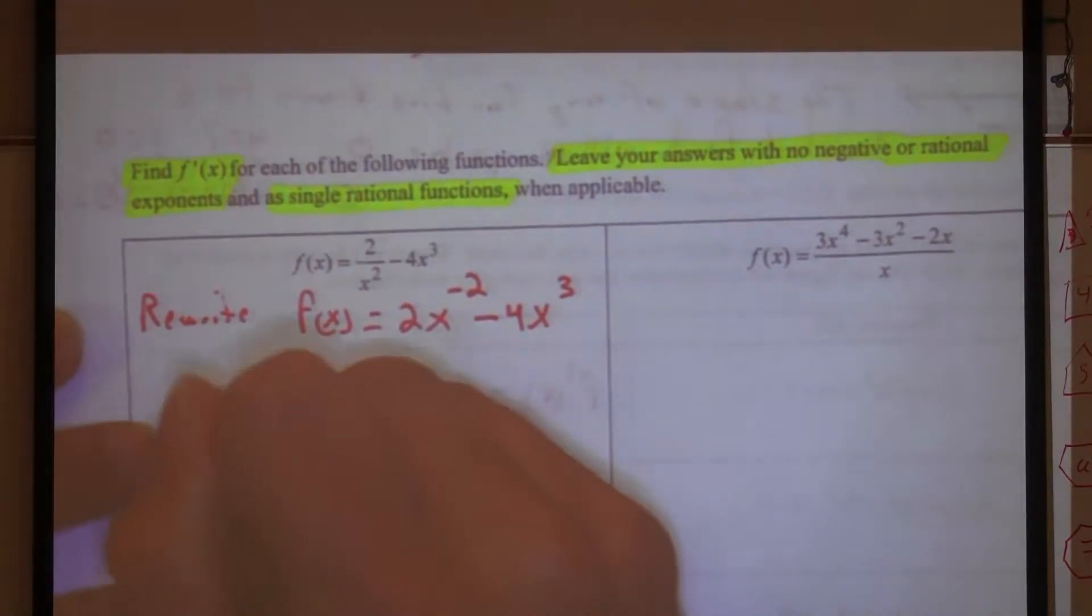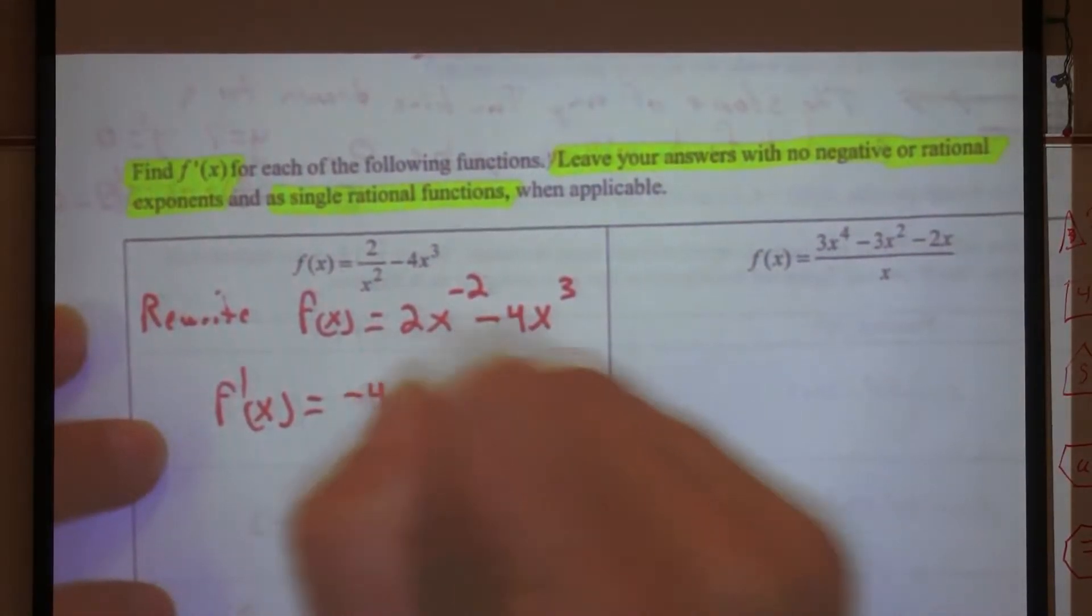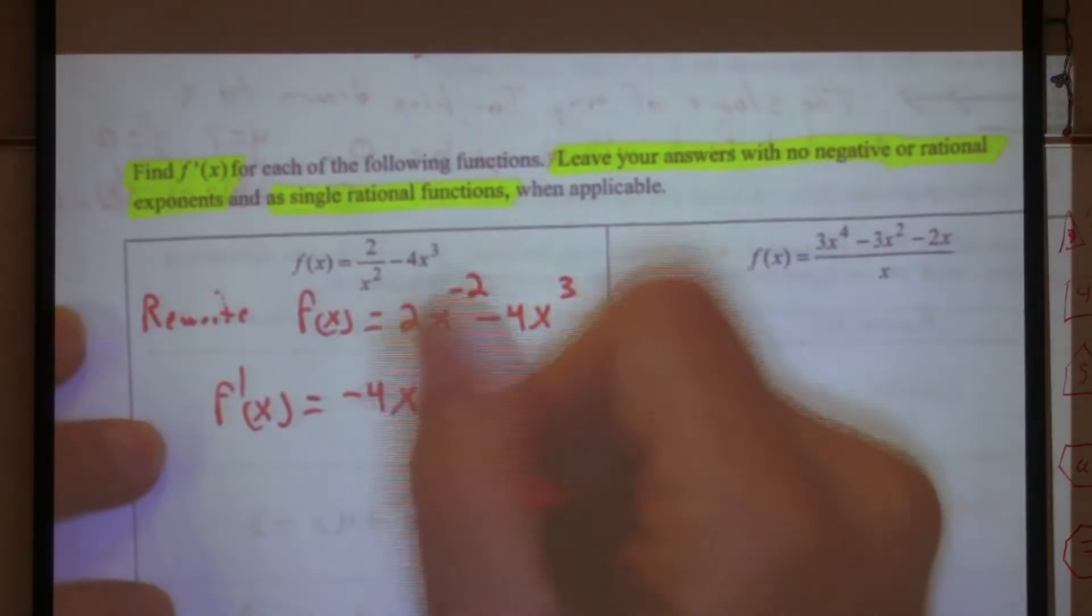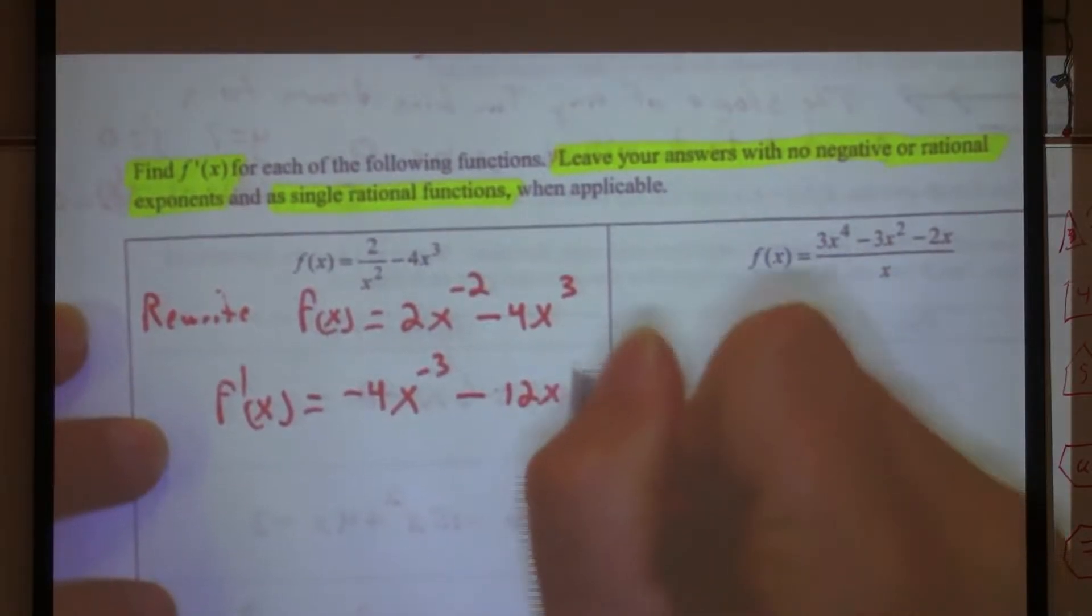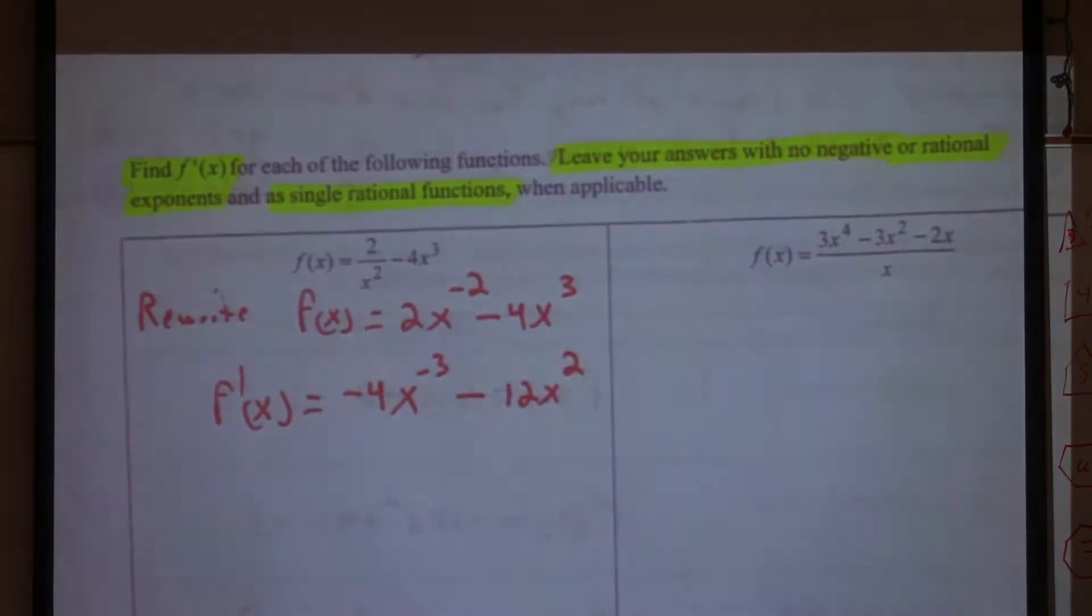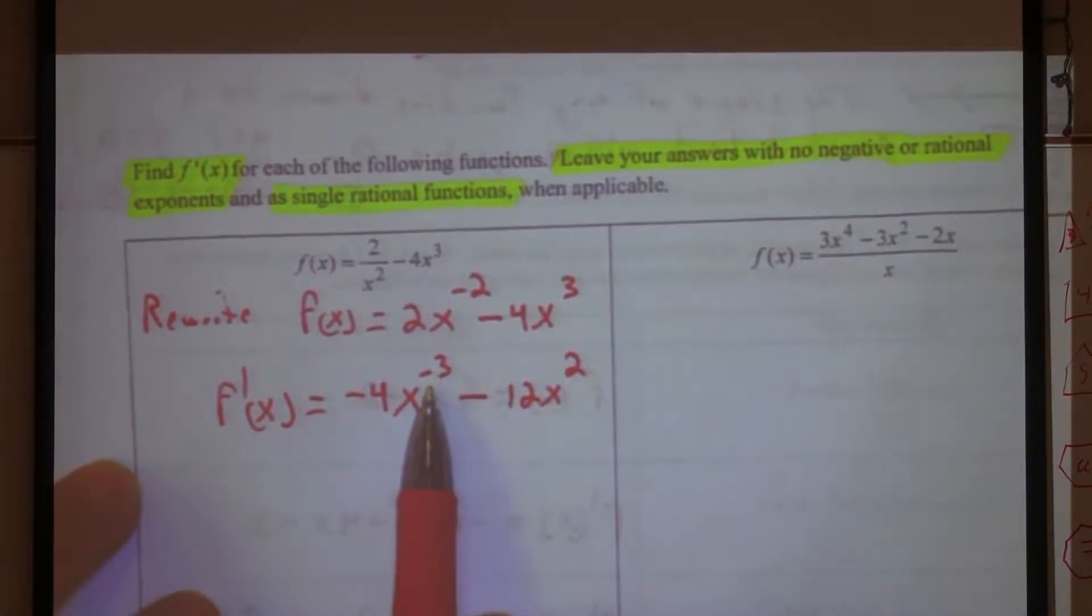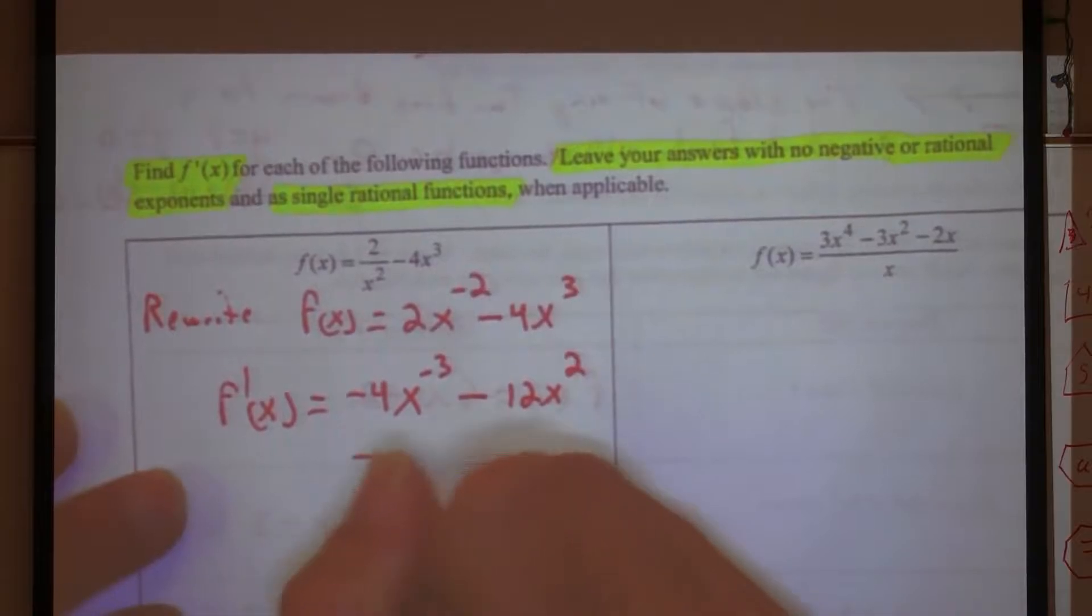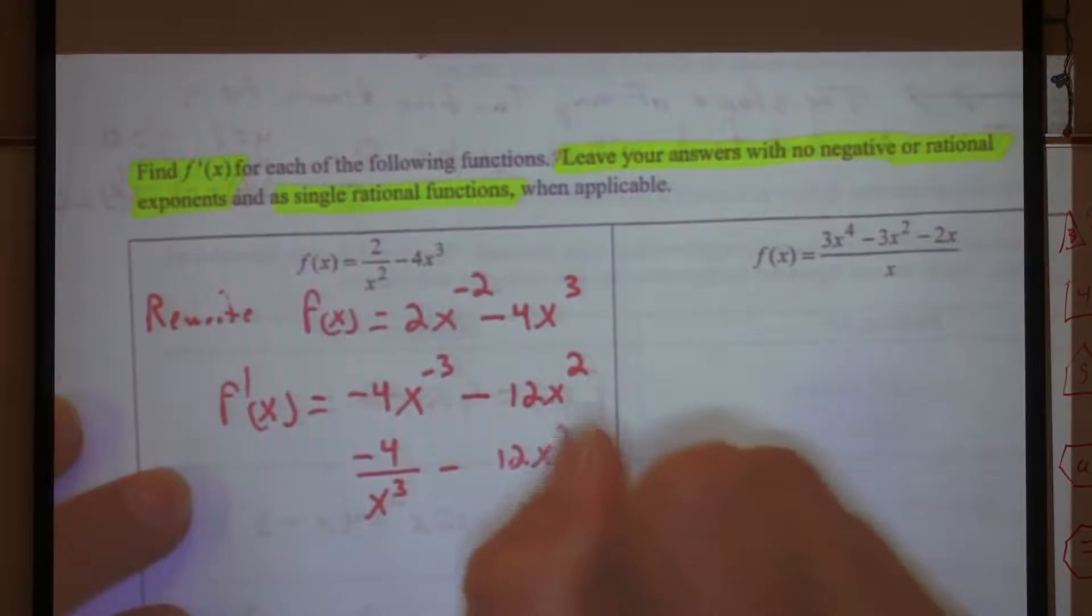So what would it become? Two times the negative two. Two x to the negative two minus four x to the third. I don't have to mess with that one. That one's good to go. Are we ready to find the derivative using the new rule that we learned? Yes. Let's do it. What's my derivative going to be? Negative four x to the negative three minus 12x to the second. Awesome. So we got the derivative. Now I need to fix it.